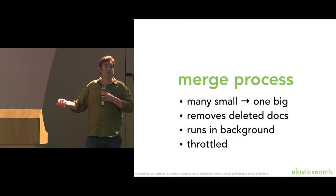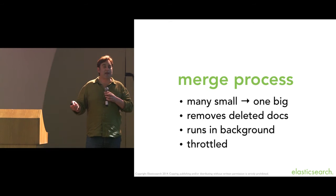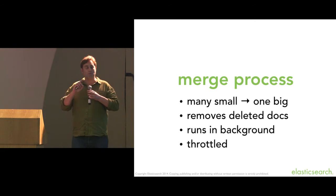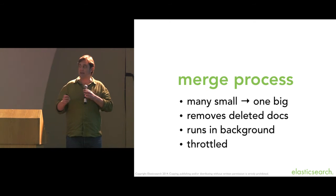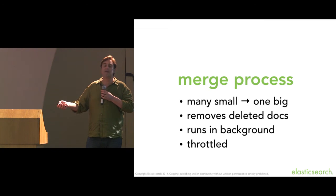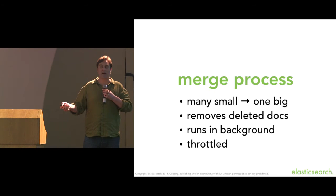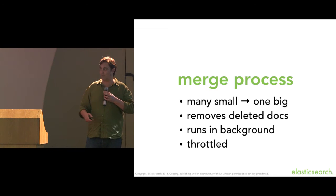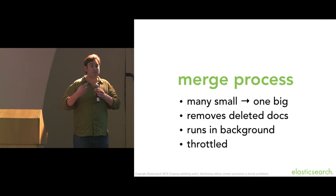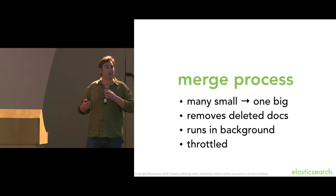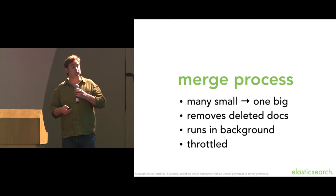Many small segments are merged into one big segment. Any deleted documents — remember a segment is immutable, so deletes don't happen immediately, documents just get marked as deleted — during the merge process those deleted documents get garbage collected and removed. We throttle the process to make sure the IO from copying loads of data doesn't kill the rest of your search and indexing functionality.